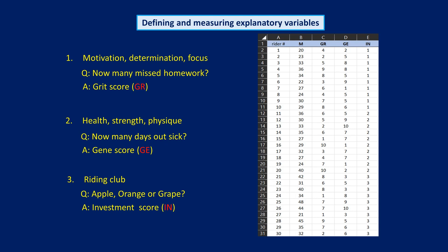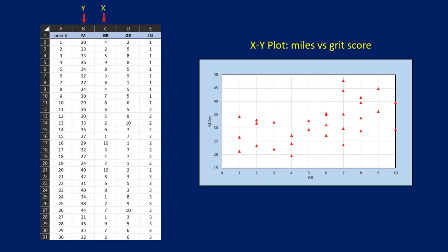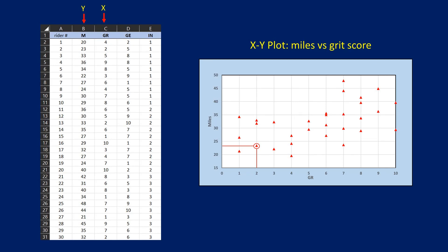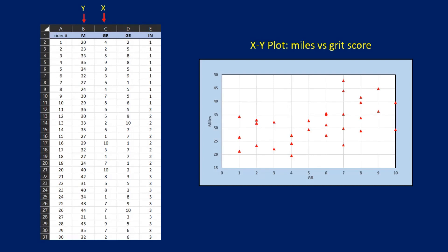Let's first look at m versus gr scores. Here's an XY plot of m versus gr. The x-axis measures the rider's gr scores ranked from lowest to highest. The y-axis measures each rider's m score. For example, this rider's gr score was 2, and she rode 23 miles. The first impression I get looking at this plot is that the points look like a swarm of flies. But on a closer look, it does appear that the higher m values tend to be associated with higher gr scores, and vice versa.